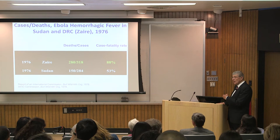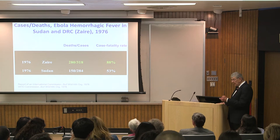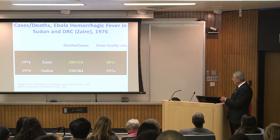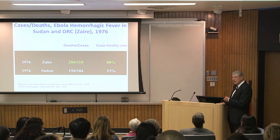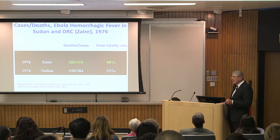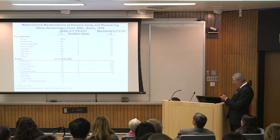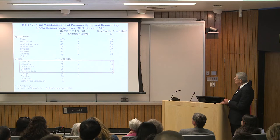We also sent a team to northeast Zaire to comb the border with Sudan to see if there was a connection. Ultimately we found that Sudan had close to 300 patients, but the case fatality rate was only about 50%. The syndrome, as we later found out, was quite different — with a lot of respiratory signs.